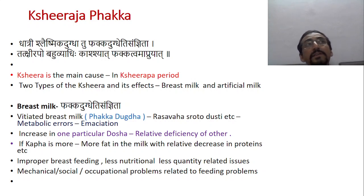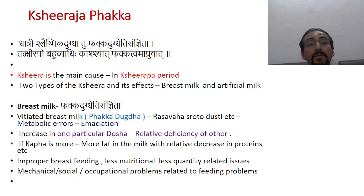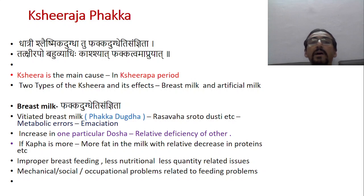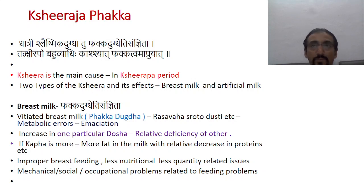Two types of kshira are present: one is breast milk, or artificial milk according to contemporary science. If there are problems with the breast milk — fakka dugdhetisam nita ha — dhatri's sleshmika dugdha, the breast milk which is vitiated by the kapha dosha in a feeding mother, is considered as fakka dugdha also.